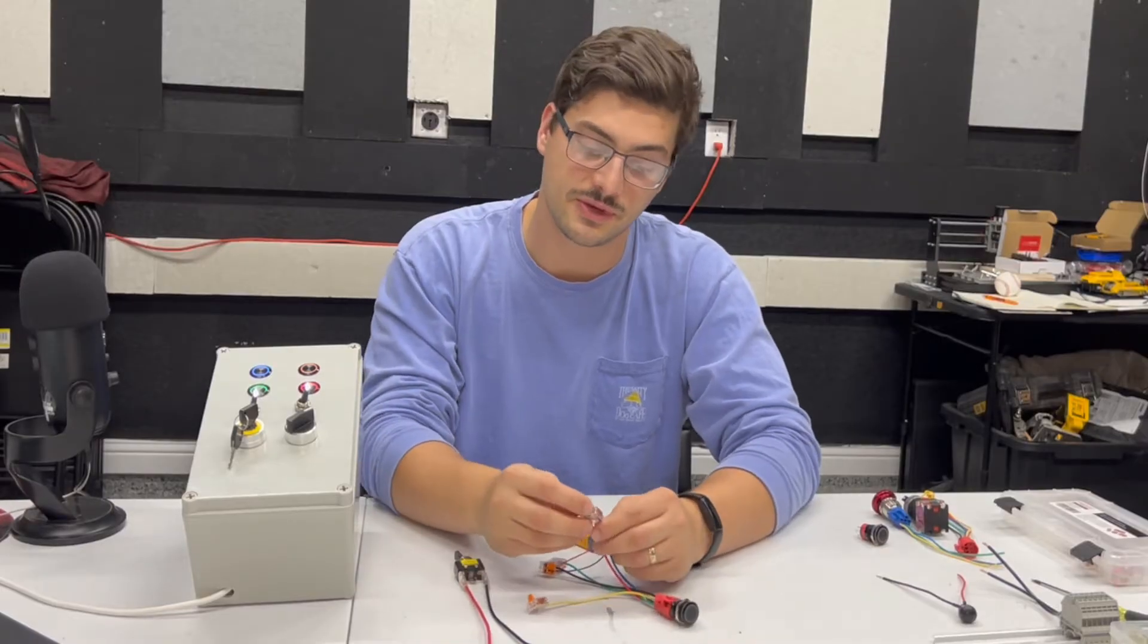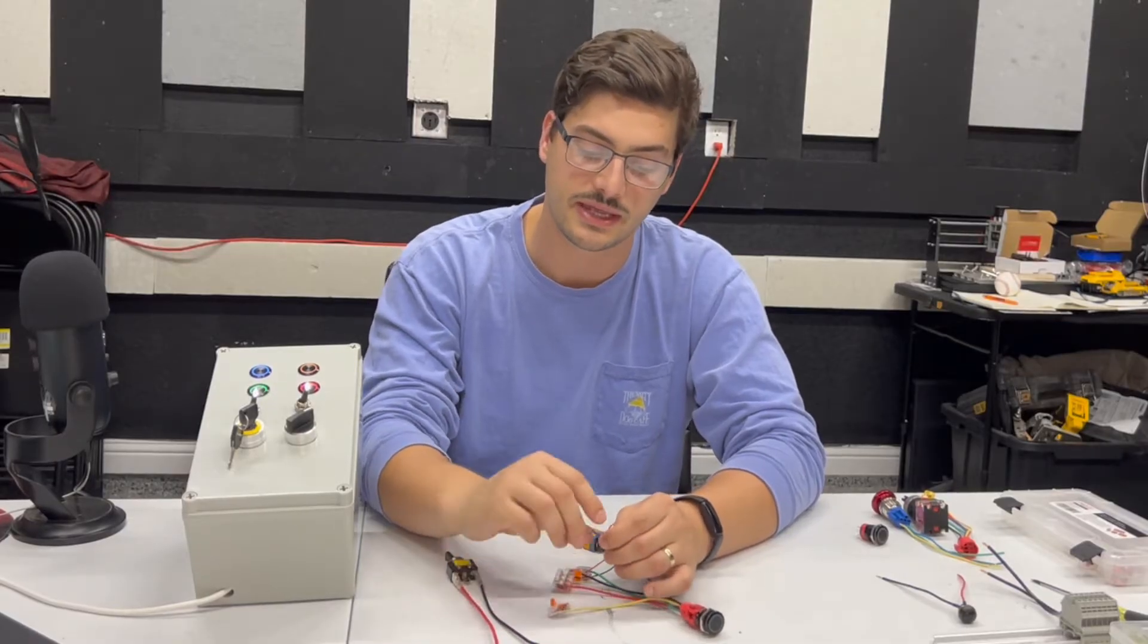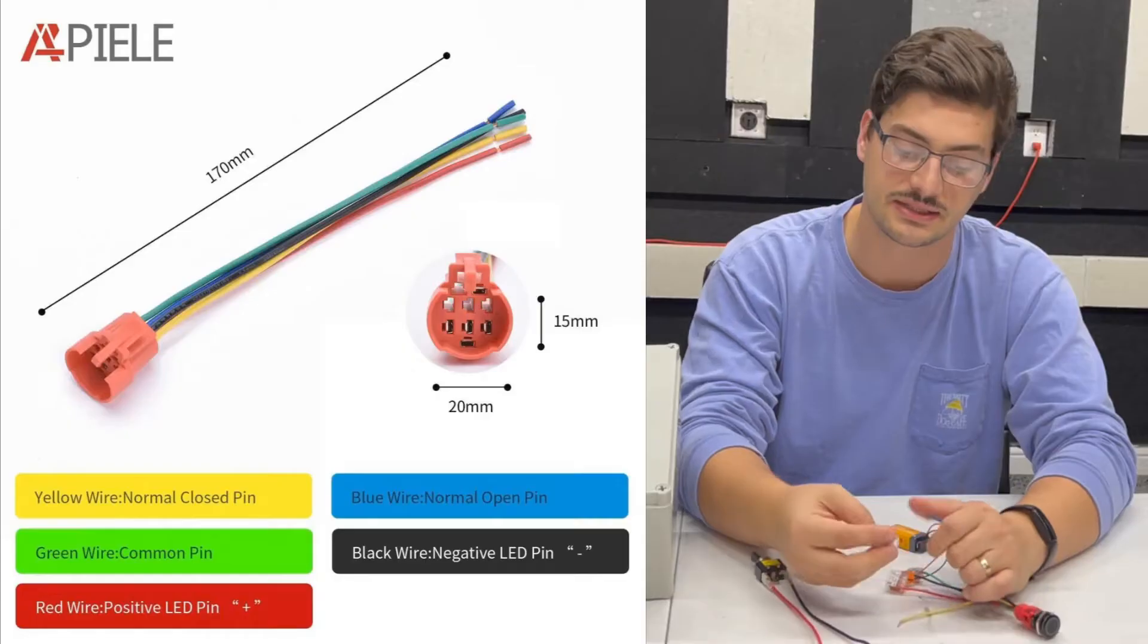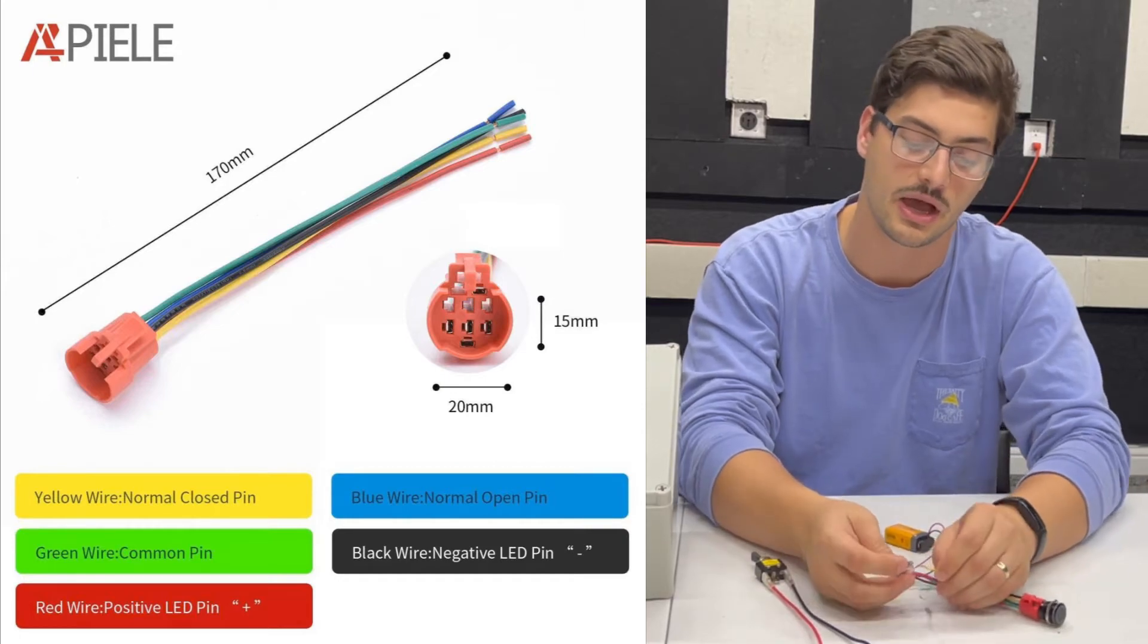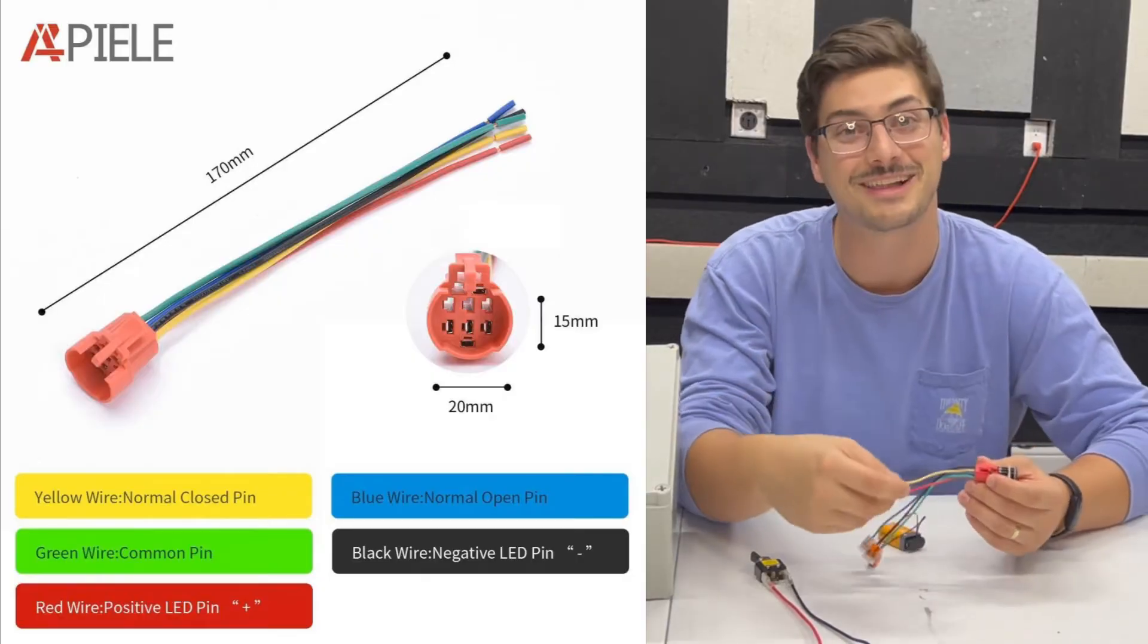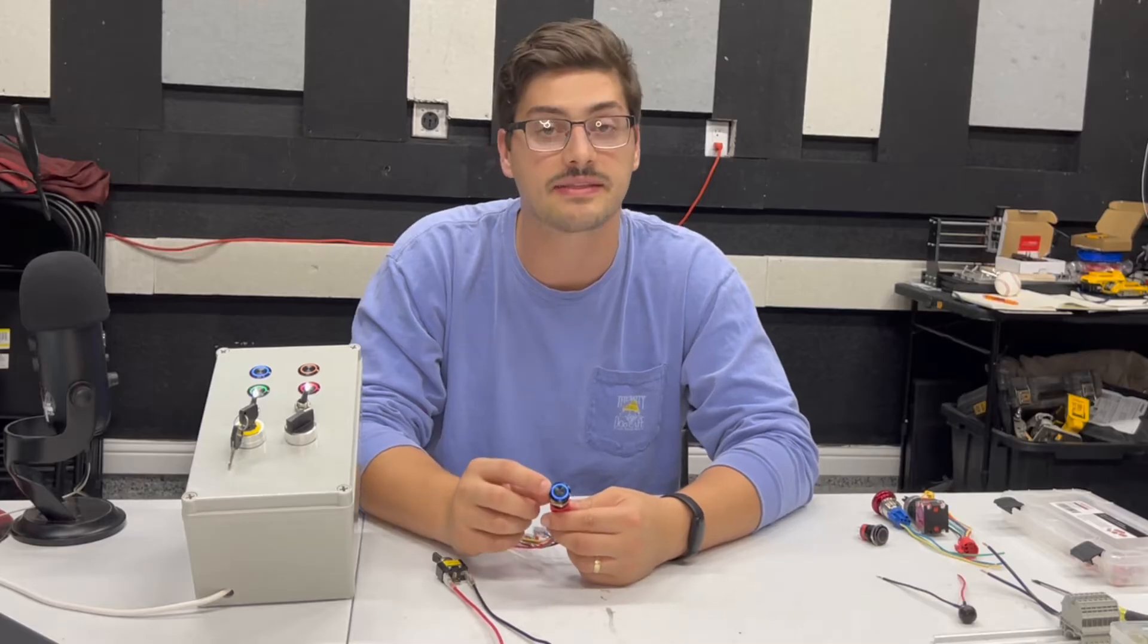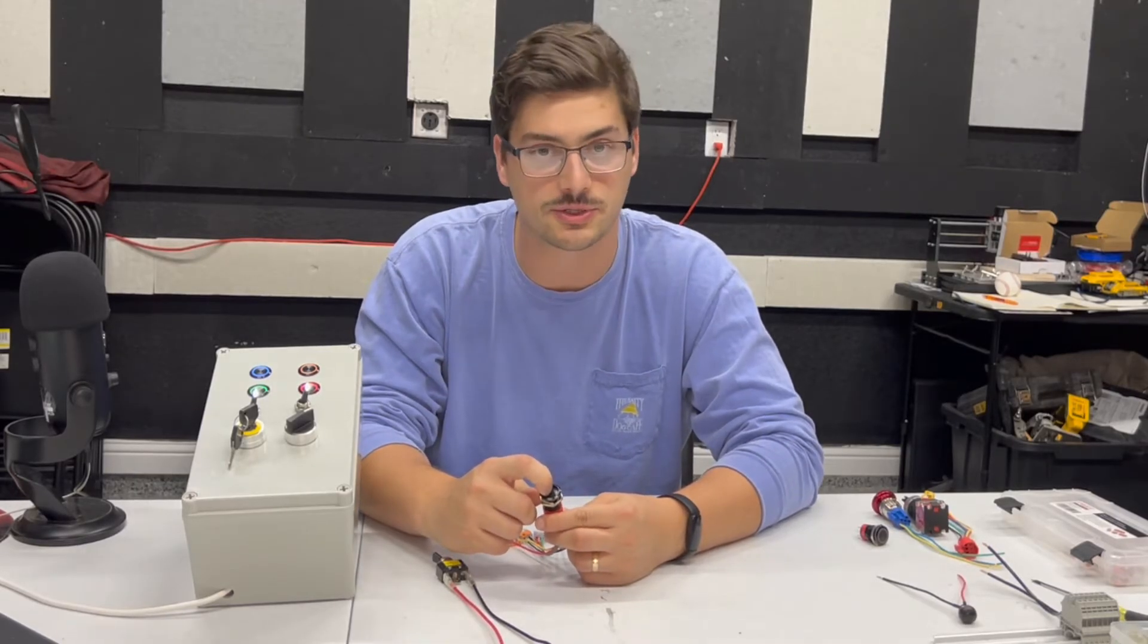To understand the difference between the normally open wire and the normally closed wire, we can just flip which one our power LED is connected to. So the red wire, which determines whether or not we have the LED powered on, is now going to get connected to my yellow wire, which correlates to normally closed on the button. Because it's normally closed, we can see that the LED turns on right away and it doesn't turn off until I push the button in.